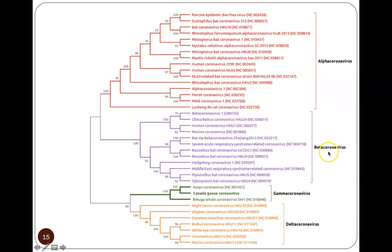Human coronaviruses fit into the beta coronaviruses. We see MERS — Middle East Respiratory Syndrome — and SARS — Severe Acute Respiratory Syndrome — both beta coronaviruses, not too distant from the human coronaviruses we deal with routinely. There's a tremendous variety of coronaviruses in nature, but these ones are theoretically more closely related.